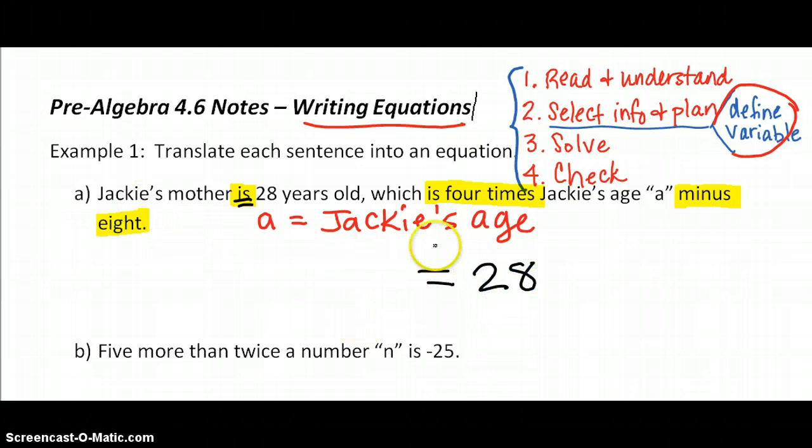Okay, that is, so that's the same equal sign, is, it's the same one, is 4 times Jackie's age. And we said Jackie's age is represented with A minus 8. So that would be the equation for that sentence.